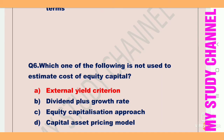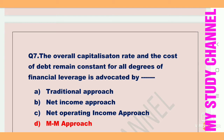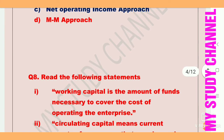Next question: the overall capitalization rate and the cost of debt remain constant for all degrees of financial leverage — this is advocated by which approach? Option A is traditional approach, B is net income approach, C is net operating income approach, and D is MM approach. MM approach is the right answer — the overall capitalization rate and cost of debt remain constant for all degrees of financial leverage is advocated by the MM approach.